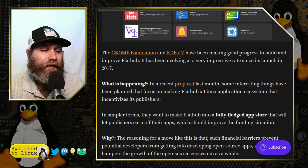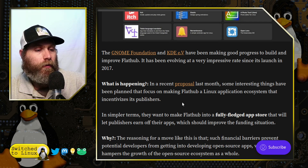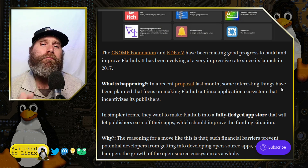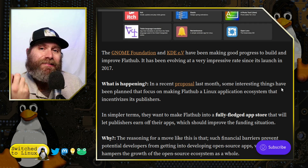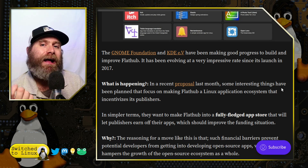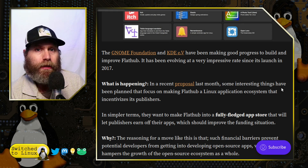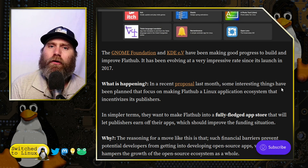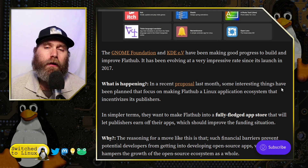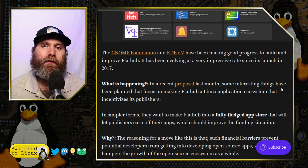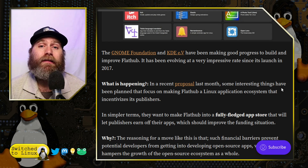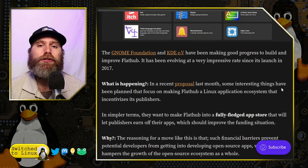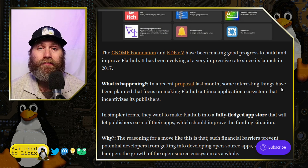A recent proposal last month has planned some interesting things, focusing on making Flathub a Linux application ecosystem that incentivizes publishers. That is the really good part — when we incentivize publishers, we have a greater possibility of having good commercially available software easily available for Linux. Commercial developers won't want their code dropped into Debian by a package maintainer because it opens their source code up to being copied, forked, and losing their proprietary value.